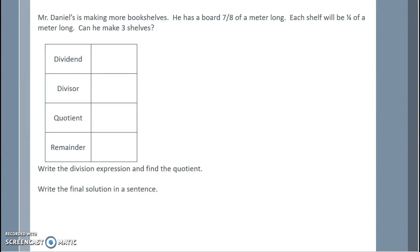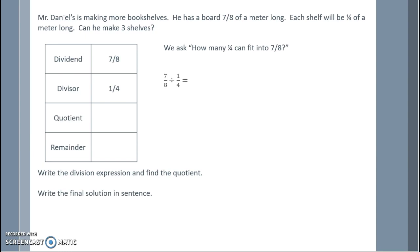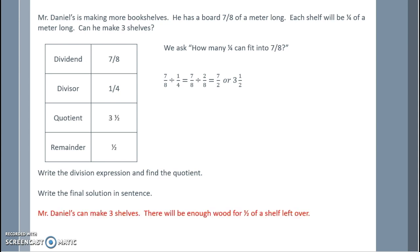Mr. Daniels is making bookshelves. He has a board seven eighths of a meter long, and each shelf will be one fourth of a meter long. Can he make three shelves? We ask how many one fourths fit into seven eighths. Seven eighths is our dividend, divided by one fourth. Converting one fourth to two eighths: two eighths fits into seven eighths three and a half times. Mr. Daniels can make three shelves, with enough wood for half a shelf left over. The quotient is three and a half and the remainder is one half.